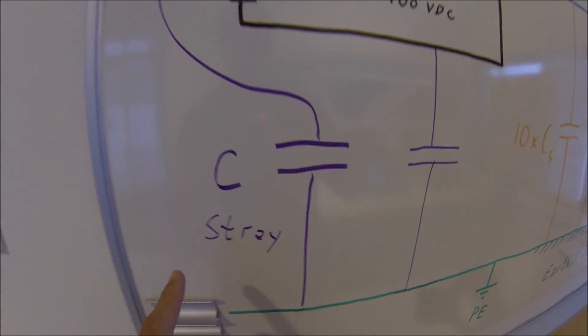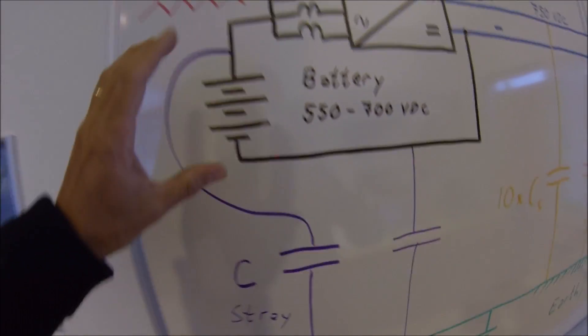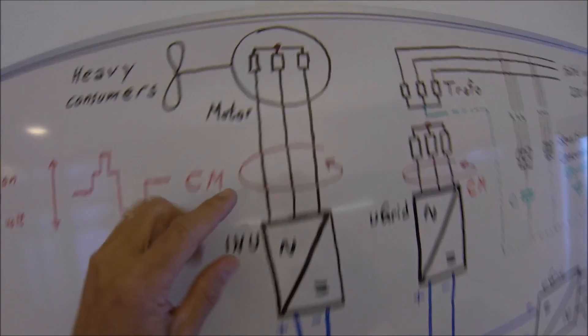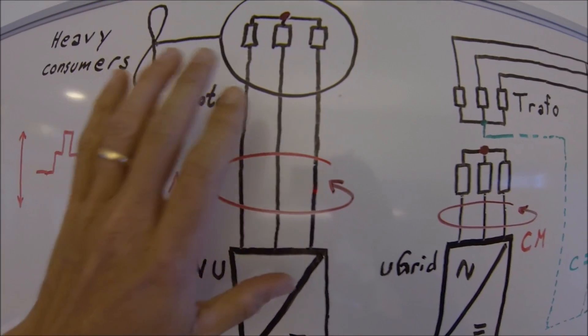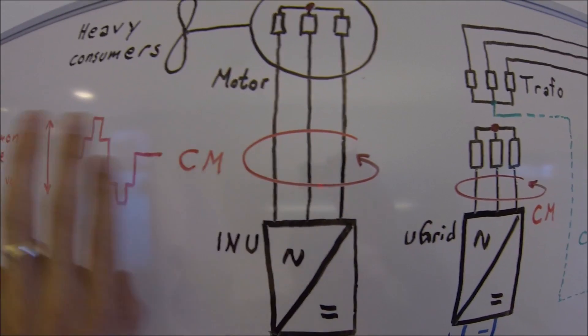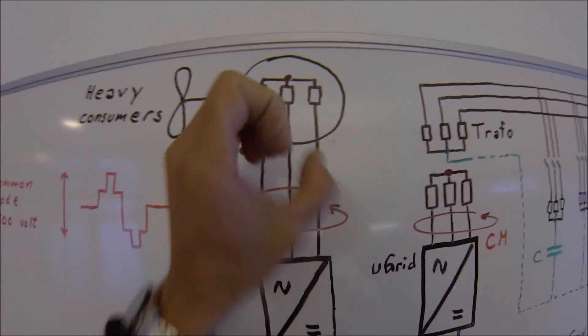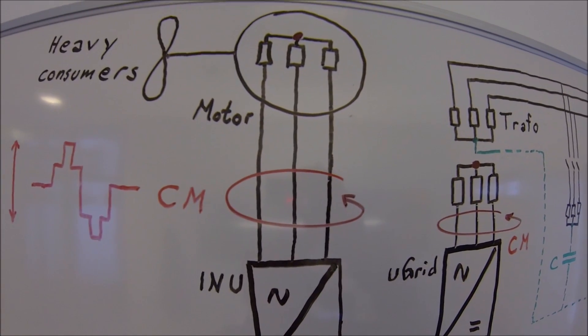And this stray capacitance is the summary of the stray capacitance in your battery, but also in your motor cables because these ones have big surface area to protective earth. And there is a certain capacitance there which will make some kind of anchoring of the system.